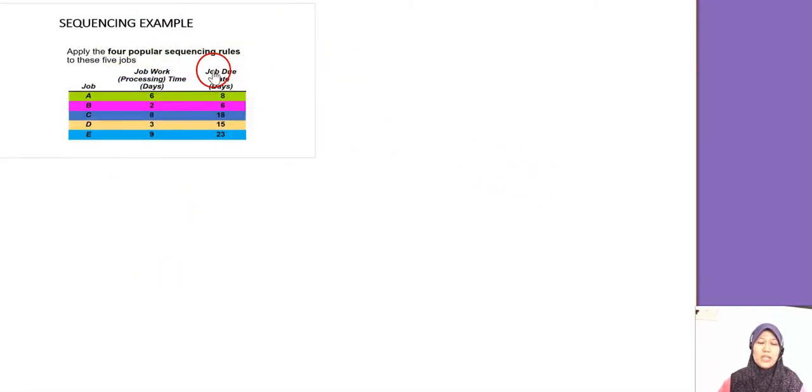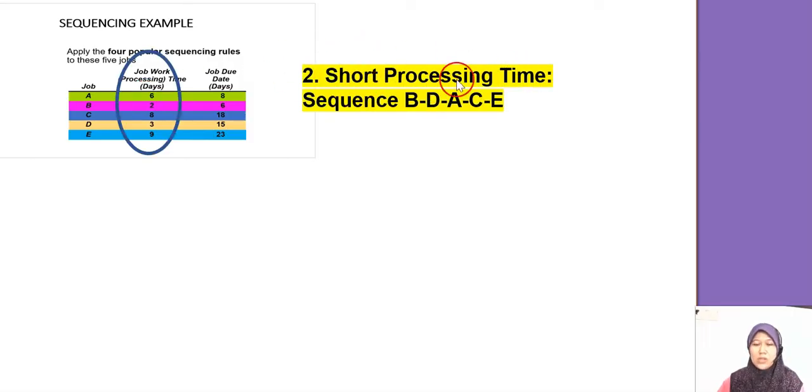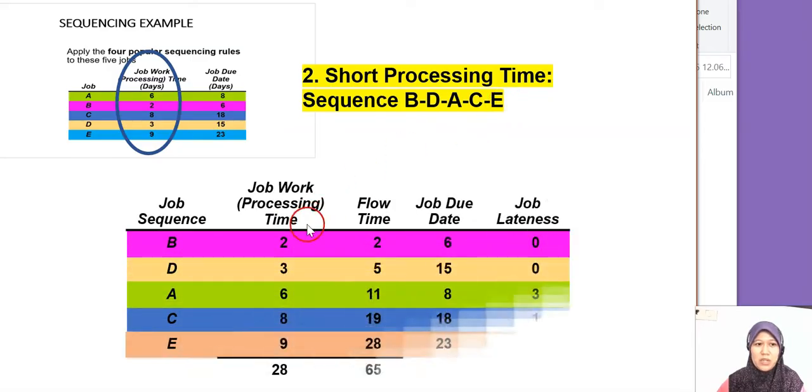Next, let's do the next rule, SPT, short processing time. So we need to do the sequence first. The sequence for SPT is to look at the processing time. We will go with the lowest or the minimum processing time, which is B, and then follow by D, and then A, and then C at 8, and then the maximum one is 9. So the sequence for SPT is B, D, A, C, E. Once we have this sequence, we need to do the table by having B, D, A, C, E here. So we need to put the processing time based on this information. Then you sum this one first. Then you do the flow time.